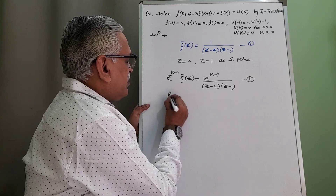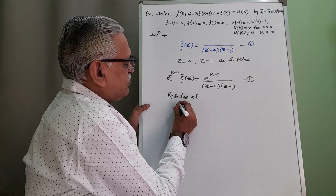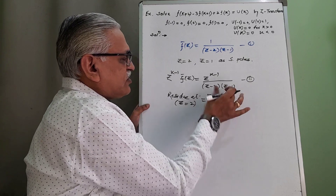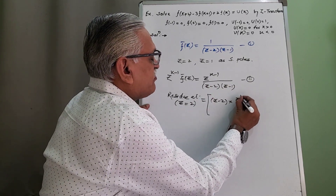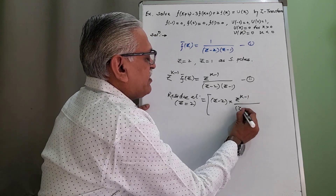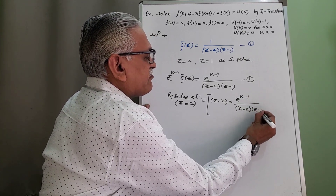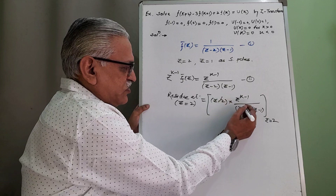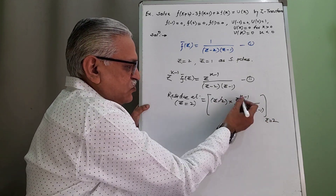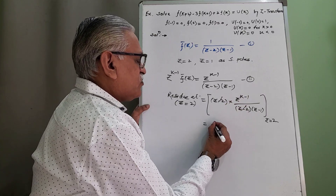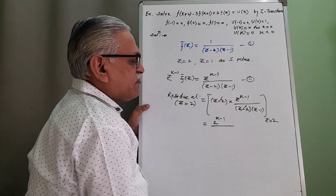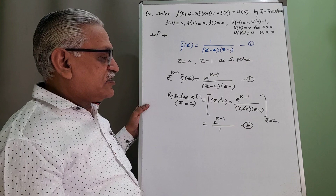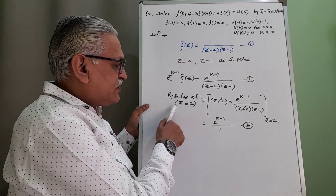We find the residue at each pole. Residue at the first pole Z=2: multiply (Z−2) by Z^(k−1)/[(Z−2)(Z−1)], the (Z−2) factors cancel, then substitute Z=2 in the remaining terms. We get 2^(k−1)/(2−1) = 2^(k−1)/1 = 2^(k−1). This is equation 3, the residue at Z=2.